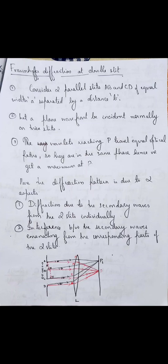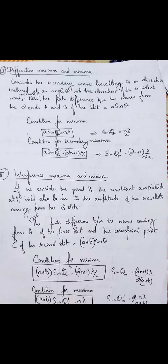Now let us study what is the diffraction pattern that you get when you have two slits and you allow a plane wavefront to be incident normally on it. Looking at the figure, we have two parallel slits AB and CD having width small 'a' and they are separated by a distance small 'p'.